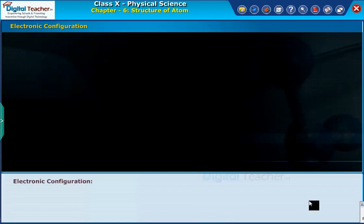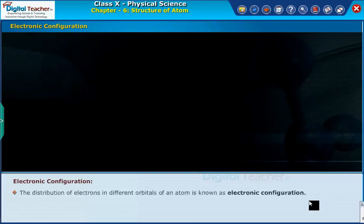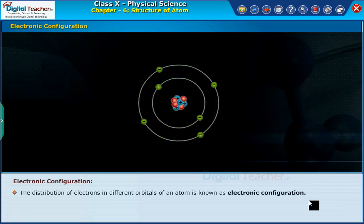Let us know about the electronic configuration. The distribution of electrons in different orbitals of an atom is known as electronic configuration.